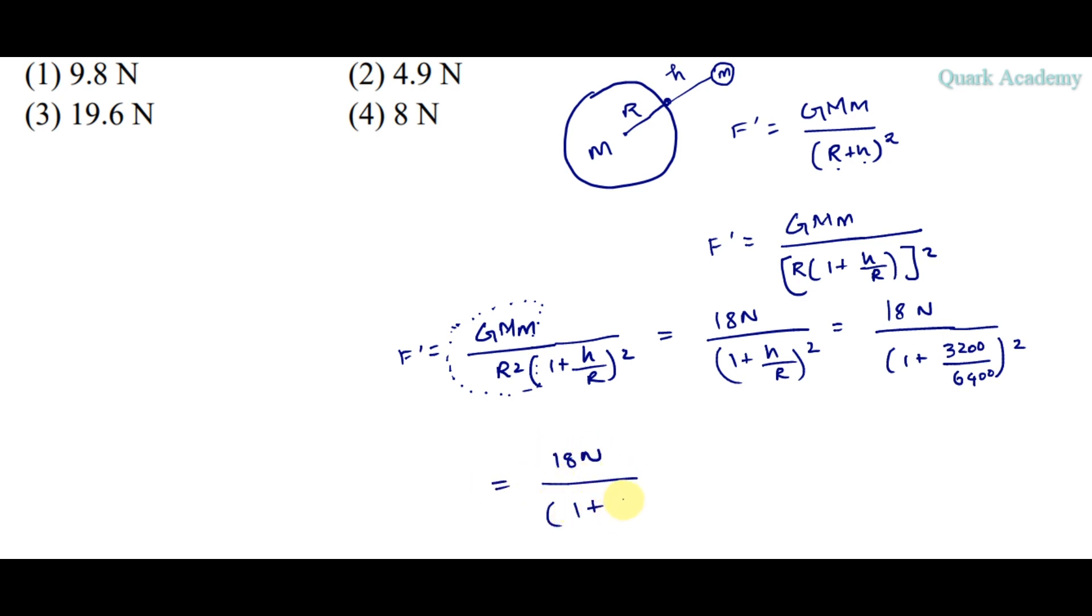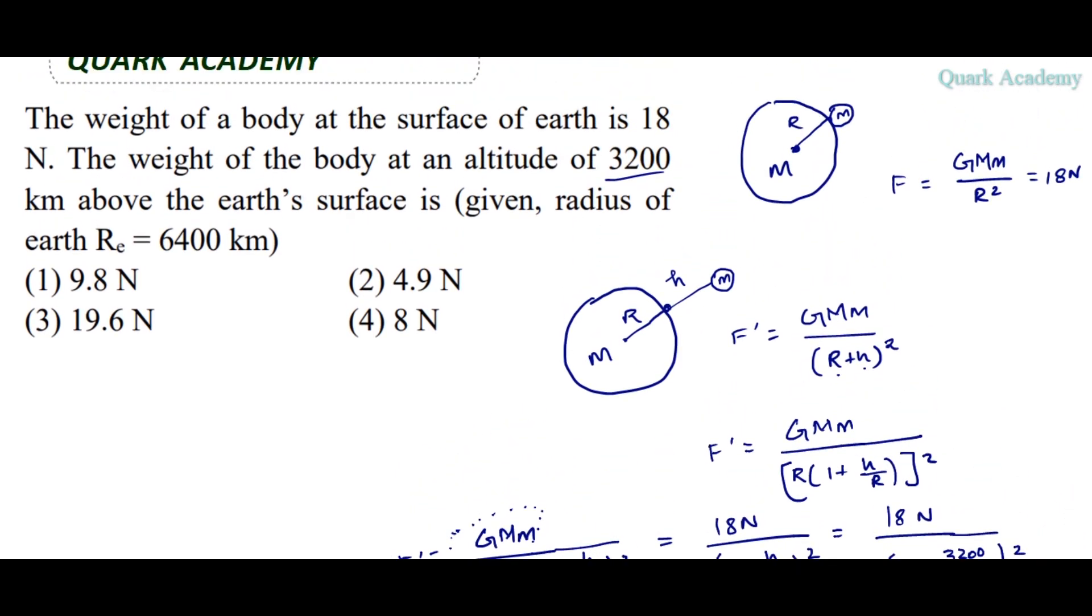18N, this is 1 by 2 all square. This is 18N into 3 by 2 whole square, which is 18 into 4 by 9 N. This is 2, 8N. So 8N is the correct answer.